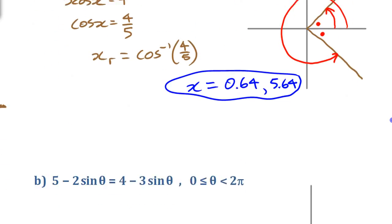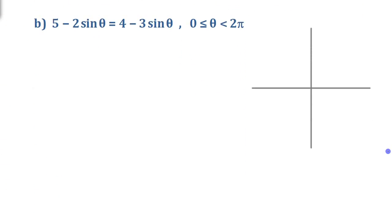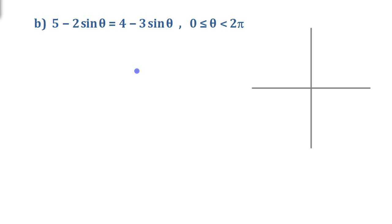Let's look at a second example. This one requires a little bit more isolation. You have the equation 5 minus 2 sine theta equals 4 minus 3 sine theta. Just like any other equation, treat sine theta as your variable until you get it isolated, and then worry about finding angles. Don't do anything else with sine theta first — just treat it as something you're isolating.